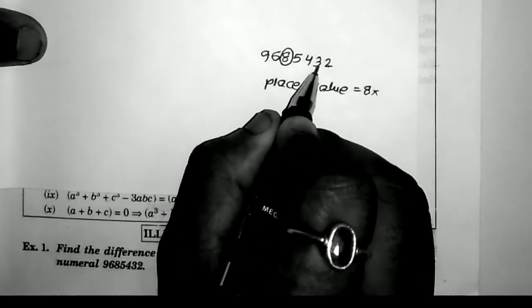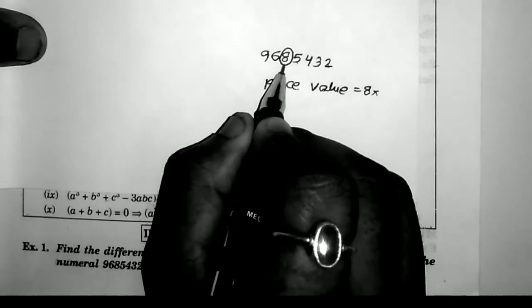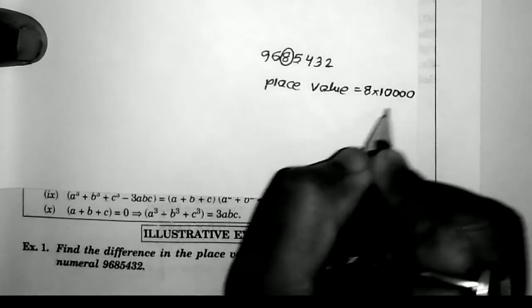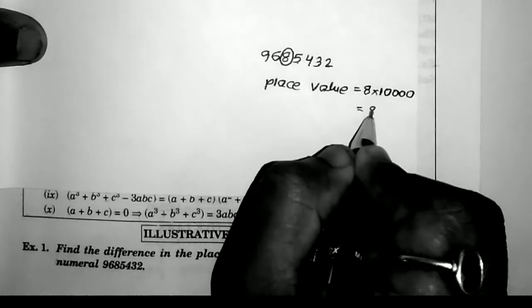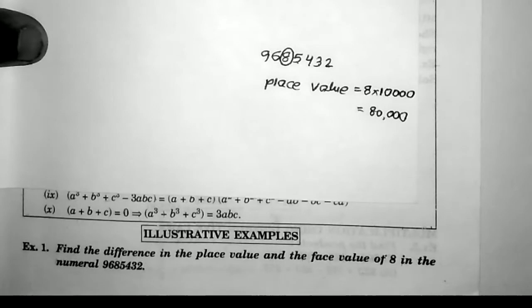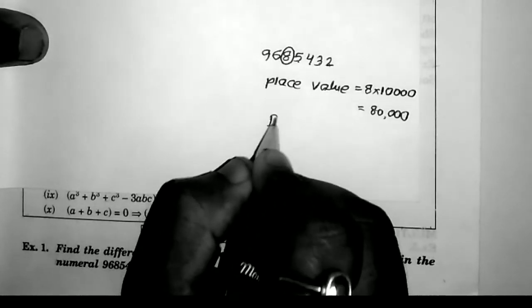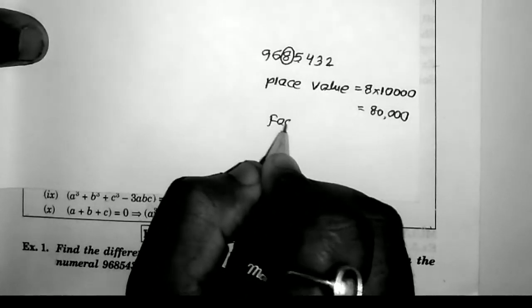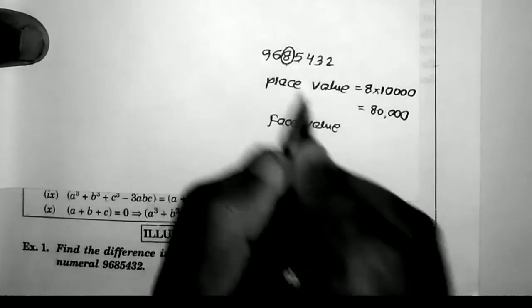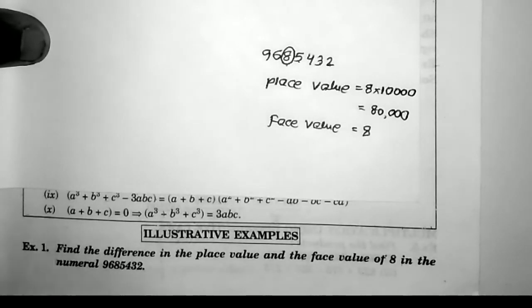Looking at the positions: units place, tens place, hundreds place, thousands place, ten-thousands place. The digit 8 is in the ten-thousands place. So place value of 8 is equal to 8 into 10,000, which equals 80,000. Face value means the number itself, so face value of 8 is equal to 8.